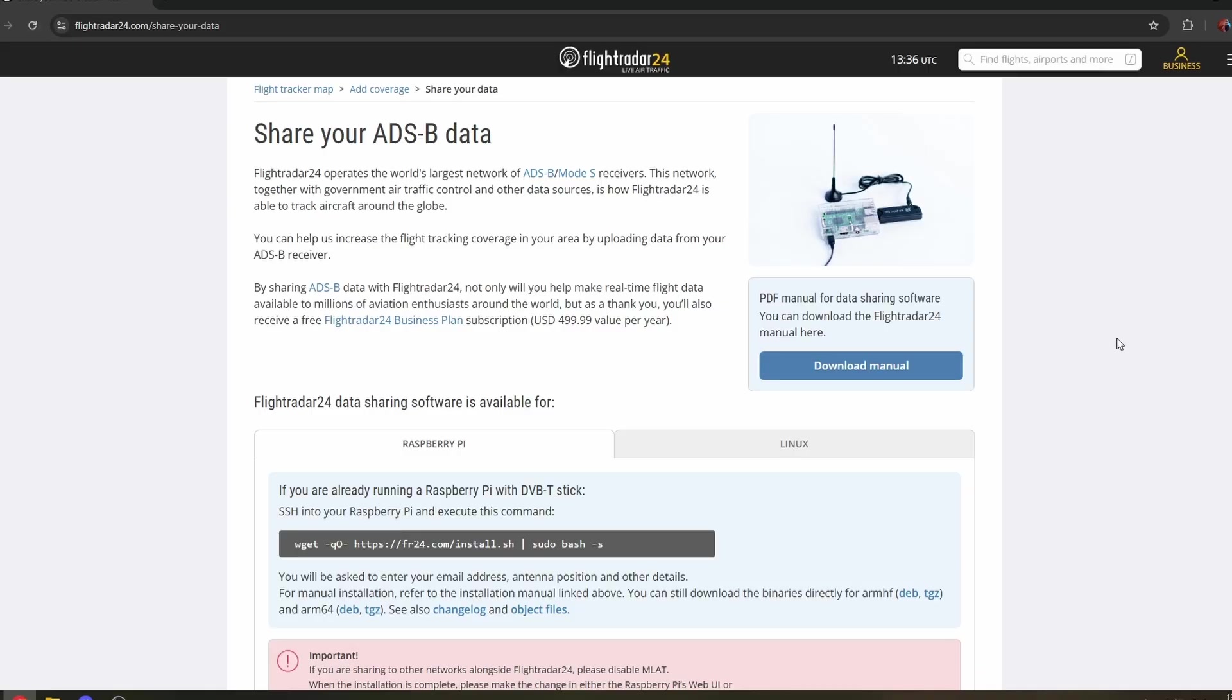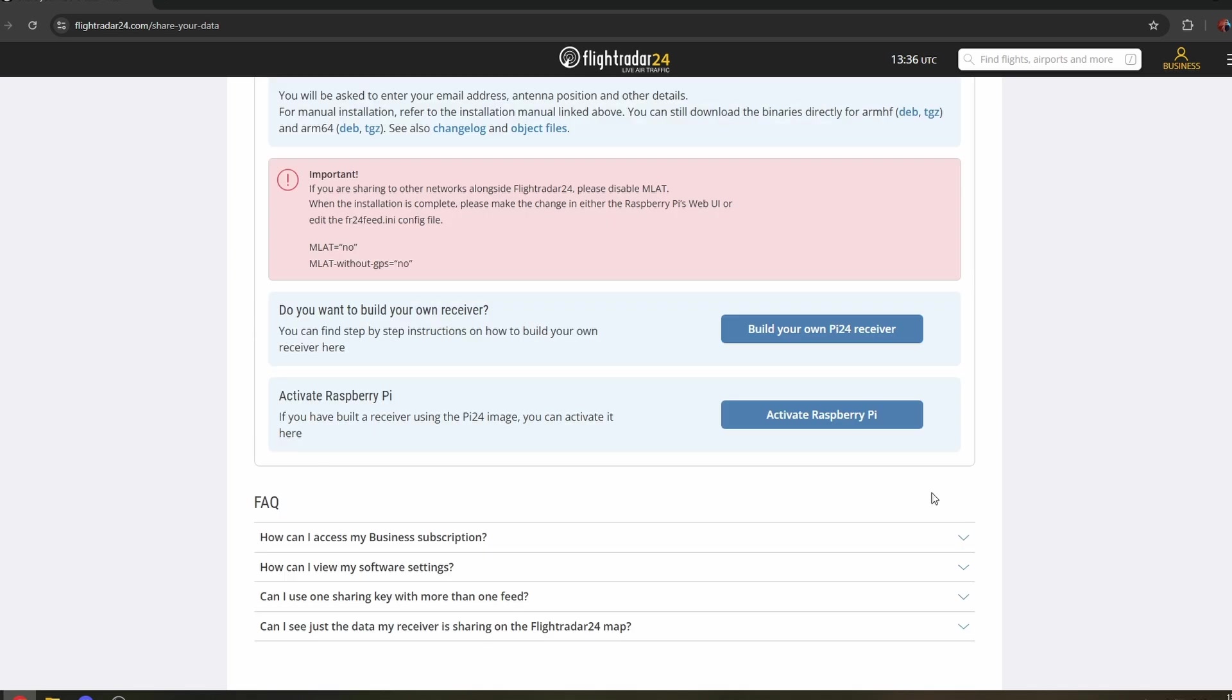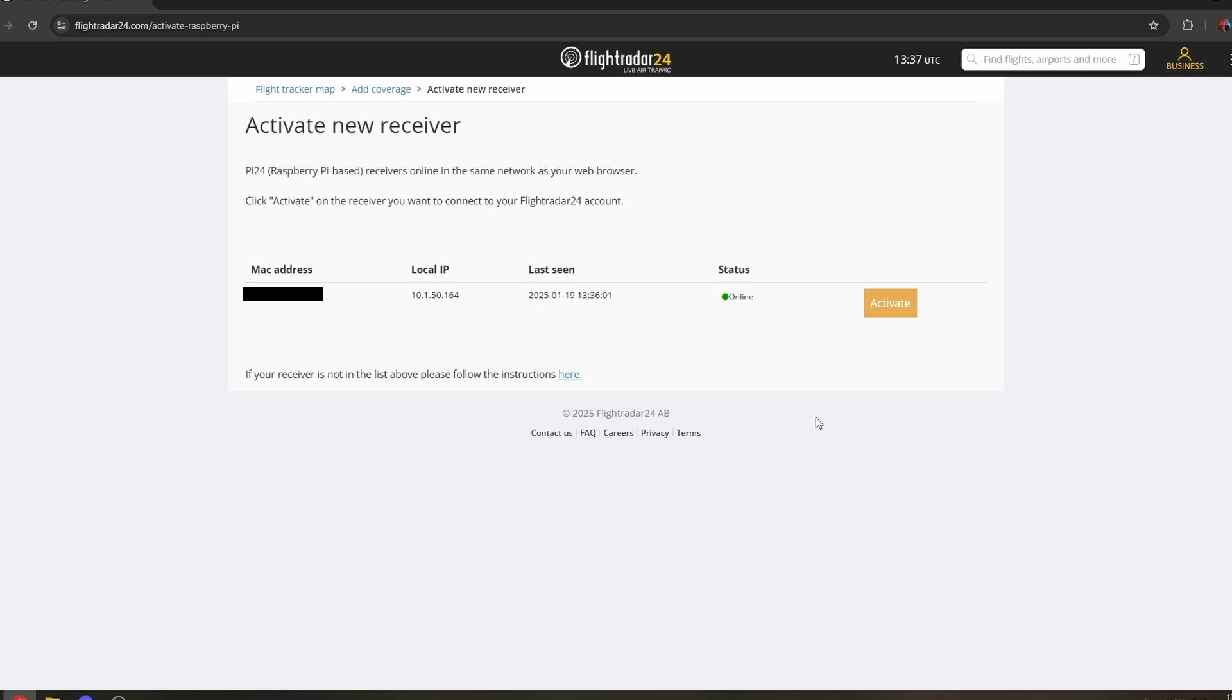If we go into add coverage in the menus and then share your data. This will then allow you to register your device. So at the moment we are running a Raspberry Pi. And as you scroll down we've got a button here to activate Raspberry Pi. So we'll click on that.